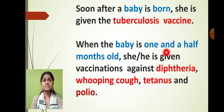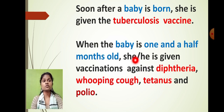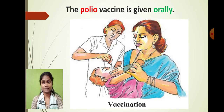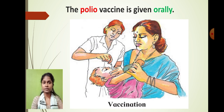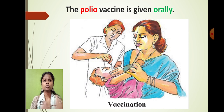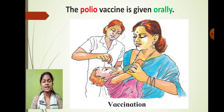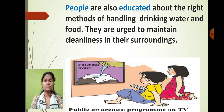Soon after a baby is born, it is given the tuberculosis vaccine. When the baby is one and a half months old, it is vaccinated against diphtheria, whooping cough, tetanus, and polio. The BCG vaccine is a combination of these and is also called the triple vaccine. Polio vaccine is given orally, typically on one Sunday each month. Every child up to five years of age should be vaccinated properly. Missing a vaccine weakens immunity and increases the risk of infection.